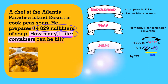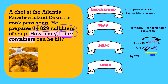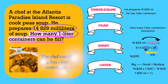That changes my number completely — my number is now 14.829. But I need to check to make sure this is correct. We know that if we want to move from a big unit to a small unit, we multiply. So I'm going to multiply 14.829 by 1,000, because there are 1,000 milliliters in one liter. When I do that, it should bring me back to 14,829. That means my answer is correct and the chef can fill 14 complete one-liter containers.